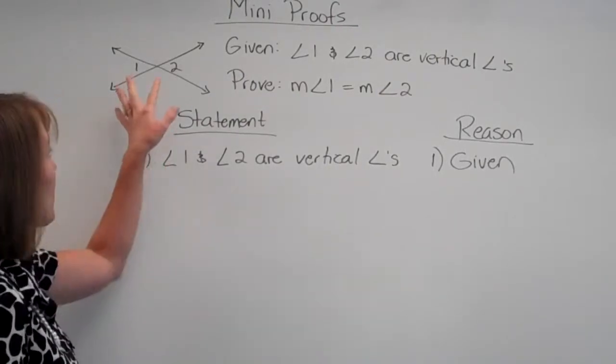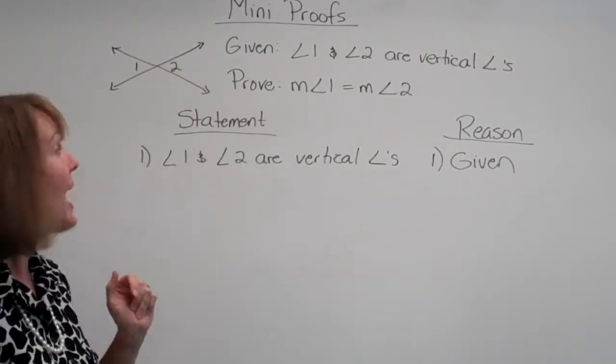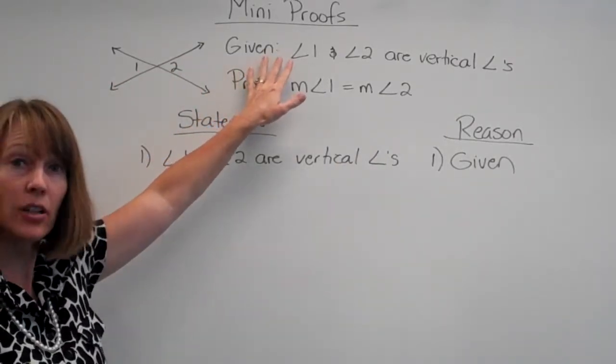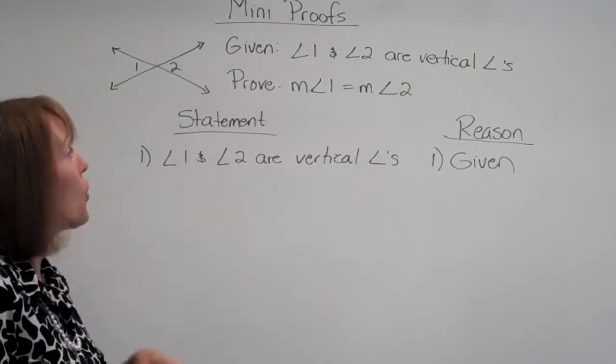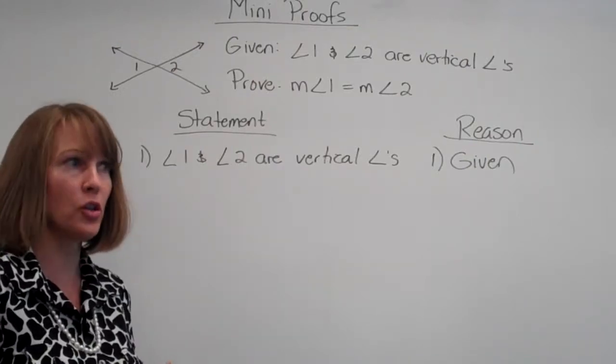All right, so here's what we've been given. We've been given two lines that cross, and the vertical angles, angle 1 and 2. And we're given that angle 1 and angle 2 are vertical angles. We're asked to prove that the measure of angle 1 is equal to the measure of angle 2.